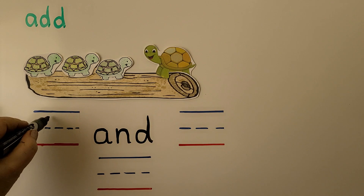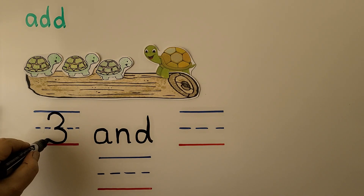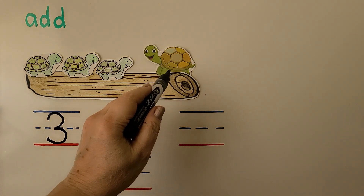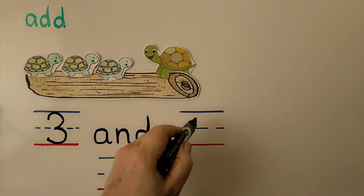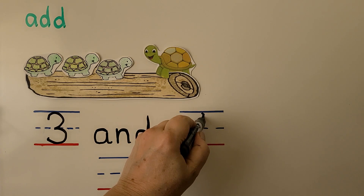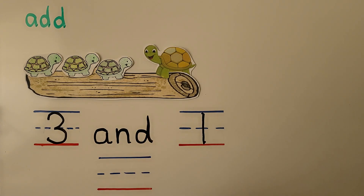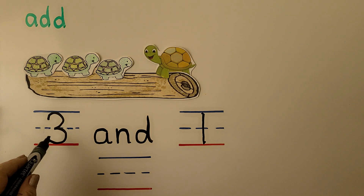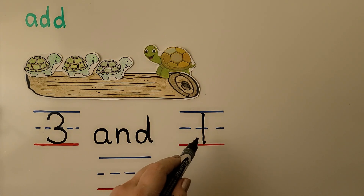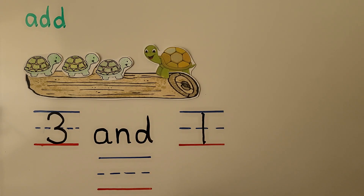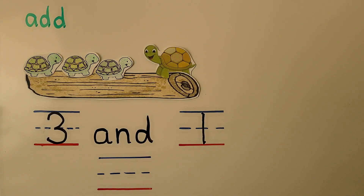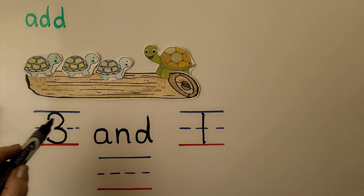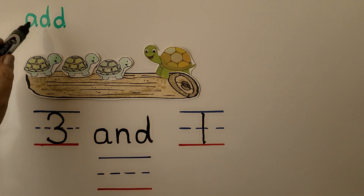We can write the numbers. This is three. And one turtle comes — we write that number here. This is the number there was at first, and this is the number more that we're adding. We have three turtles, and one.